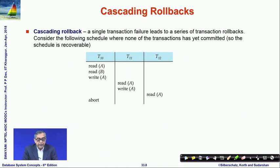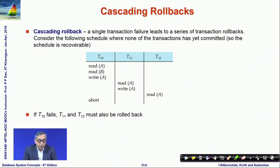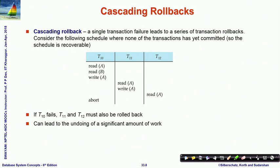A single transaction failure can have a cascading effect where a series of transactions may require rollback. For example, with transactions T10, T11, and T12: T10 reads A and B and writes A; T11 reads and writes A; T12 reads A. If T10 aborts, rolling it back means T11 used a wrong value written by T10, so T11 must also be rolled back, which in turn requires T12 to be rolled back. This is called a cascading rollback and can lead to a significant amount of work.